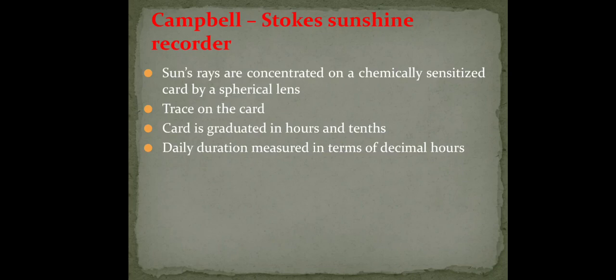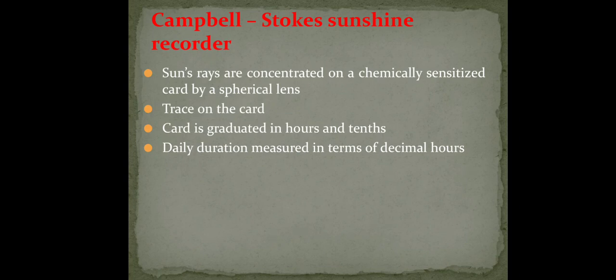Everybody might have played this game, and the same principle is used here. A glass sphere acts as a converging lens, capturing light from 360-degree directions. It focuses the light onto a single place where a card is kept. With the movement of the sun the focal point also moves, so the card continuously burns. The length of burning is measured in hours — that is how this instrument works.